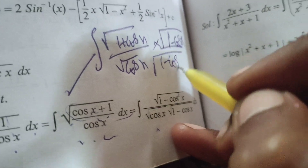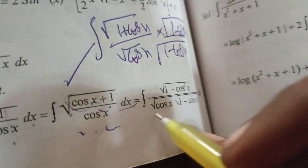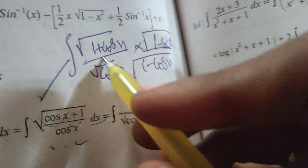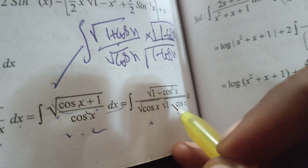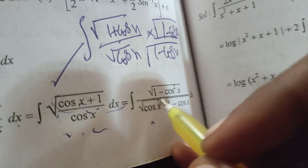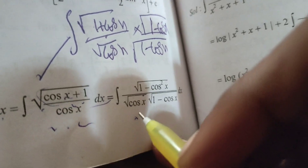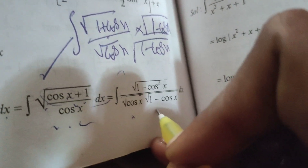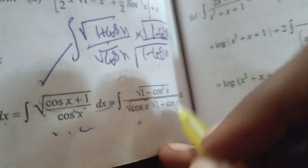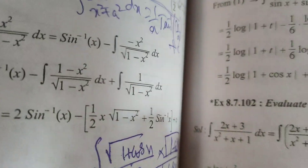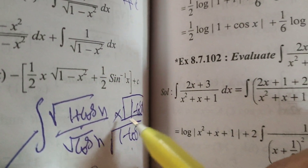Using the (a + b)(a - b) = a² - b² formula, we get the integral of root of 1 minus cos²x by root of cos x into root of 1 minus cos x dx. This simplifies to integral of root of 1 minus cos x.